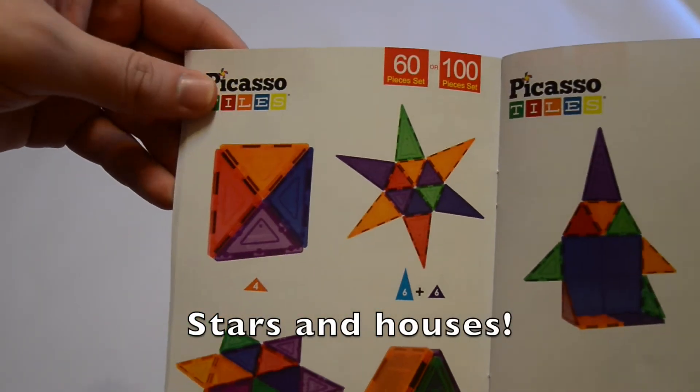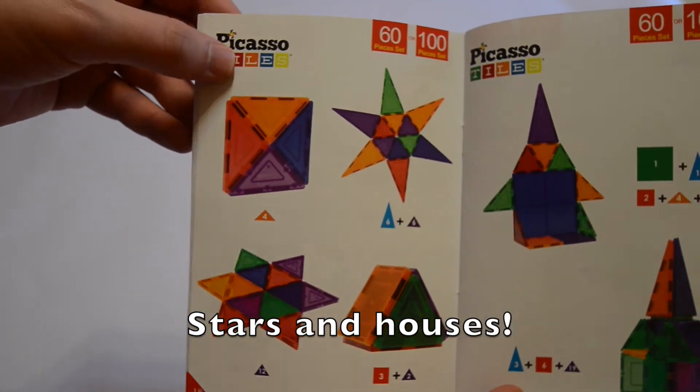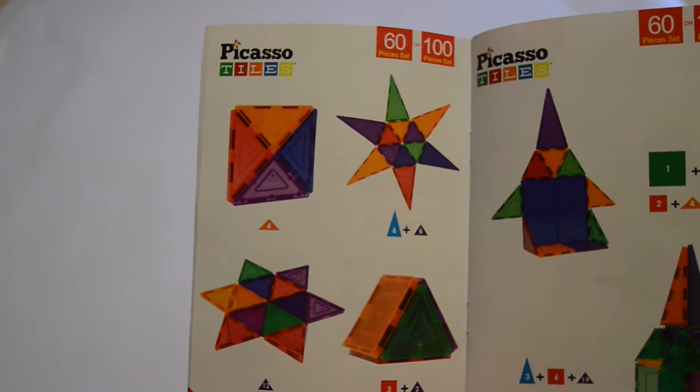Page 18, we have more assorted items, mostly stars and houses. We can use 60 or 100 piece set.